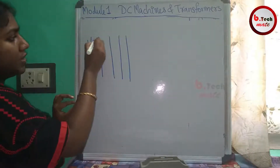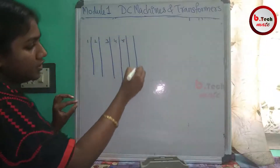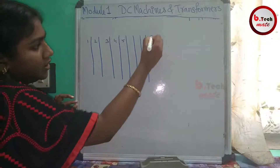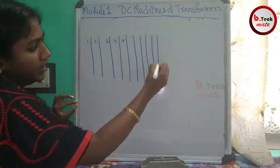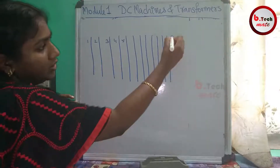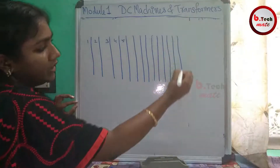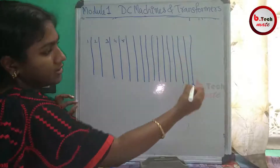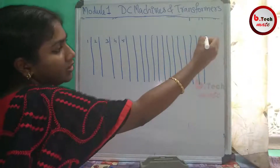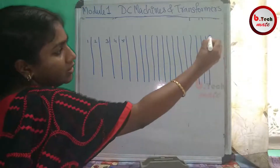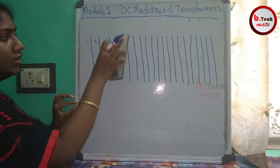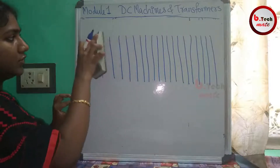Numbering the conductors: 1, 2, 3, 4, 5, 6, 7, 8, 9, 10, 11, 12, 13, 14, 15, 16, 17, 18, 19, 20 — counting out all conductor positions for the developed view layout.